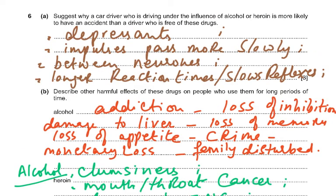Question 6: suggest why a car driver under the influence of alcohol or heroin is more likely to have an accident. These are both depressants — they depress the central nervous system, so impulses pass more slowly between neurons. It takes a longer time to react to a situation and reflexes are slowed down. That is a three-mark question requiring four mark scheme points.